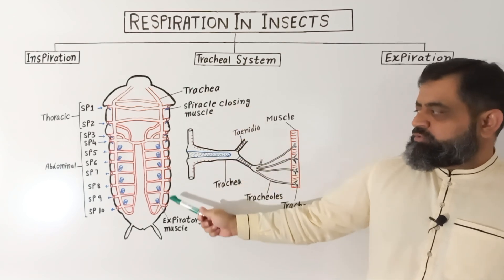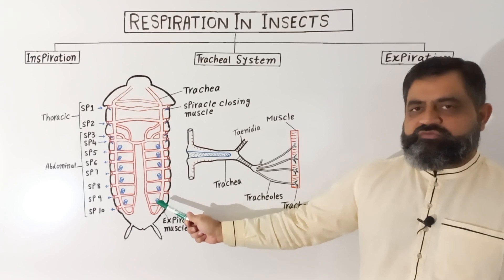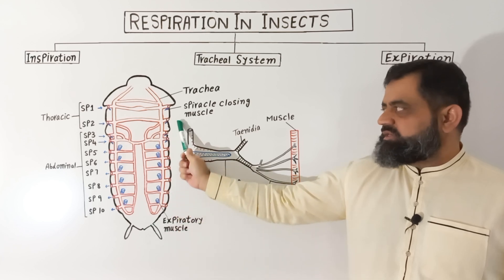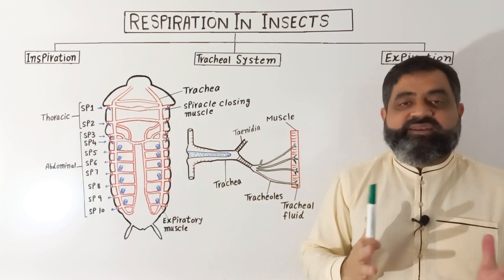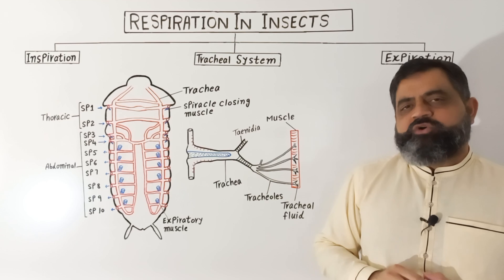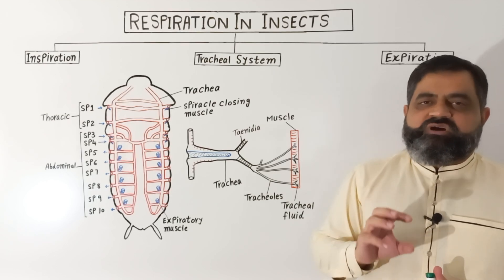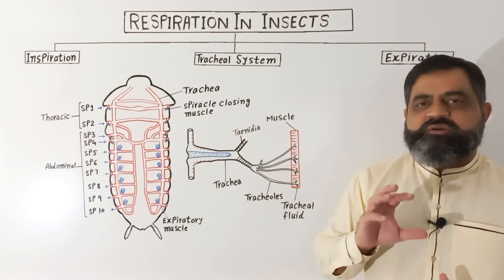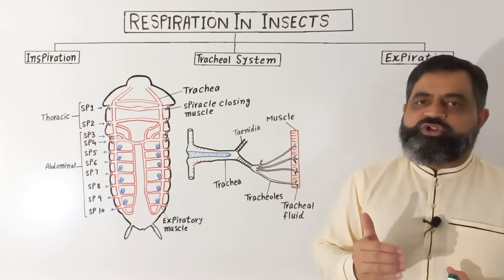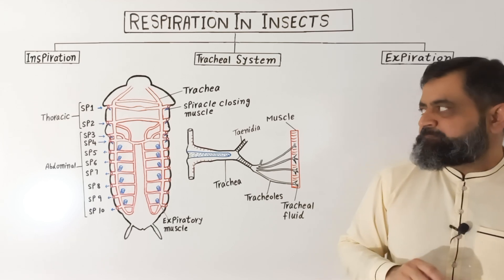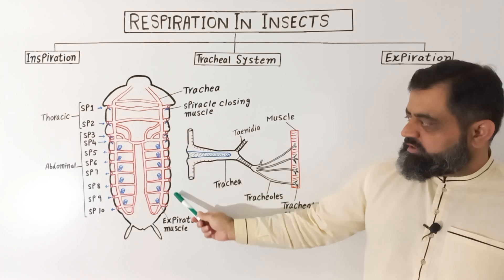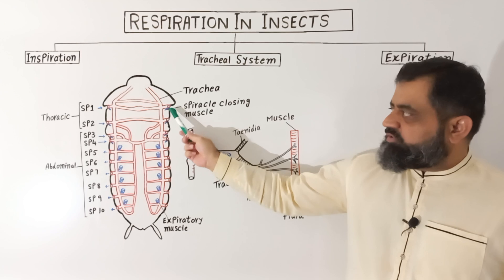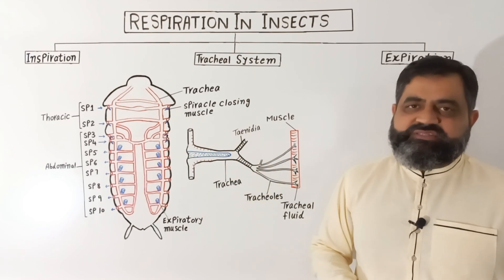If you look at the body of a cockroach — this is the cross section of the body — this is the anterior end, this is the posterior end, and these two sides are the lateral sides of the body. The tracheal system of the cockroach starts with openings which are known as spiracles, which are present on the lateral sides of the body of the insect. If you look at the lateral sides you can see tiny openings in red. These tiny openings are known as spiracles.